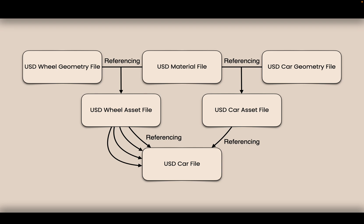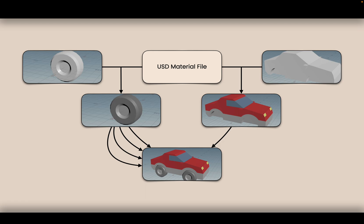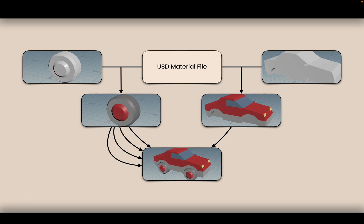So what this looks like is: a wheel with a material becomes a textured wheel. A body of the car with a texture becomes a textured body. Together, it becomes this car with four wheels. It's important to note that each of these is a separate file — the wheel, the body, the car asset, the final car, and even the material are all separate files.